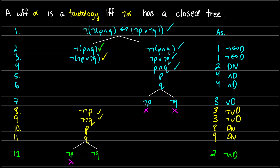At this point, both branches close because we have not-p and p, and we have not-q and q, which gives us a contradiction. We have just enough room on this page to determine that yes, all branches close. Therefore, what we looked at is a tautology.